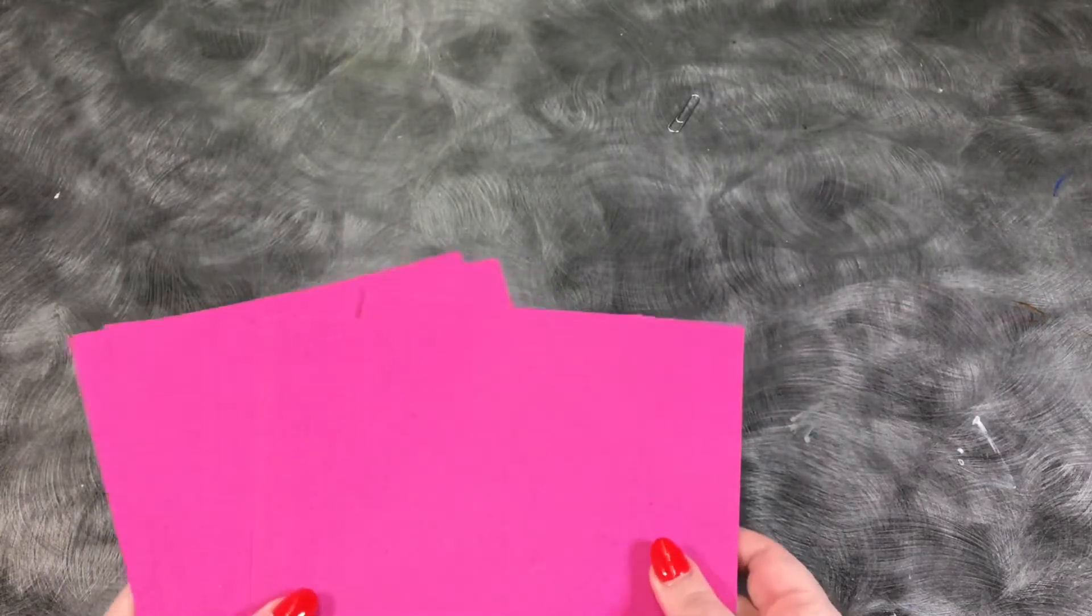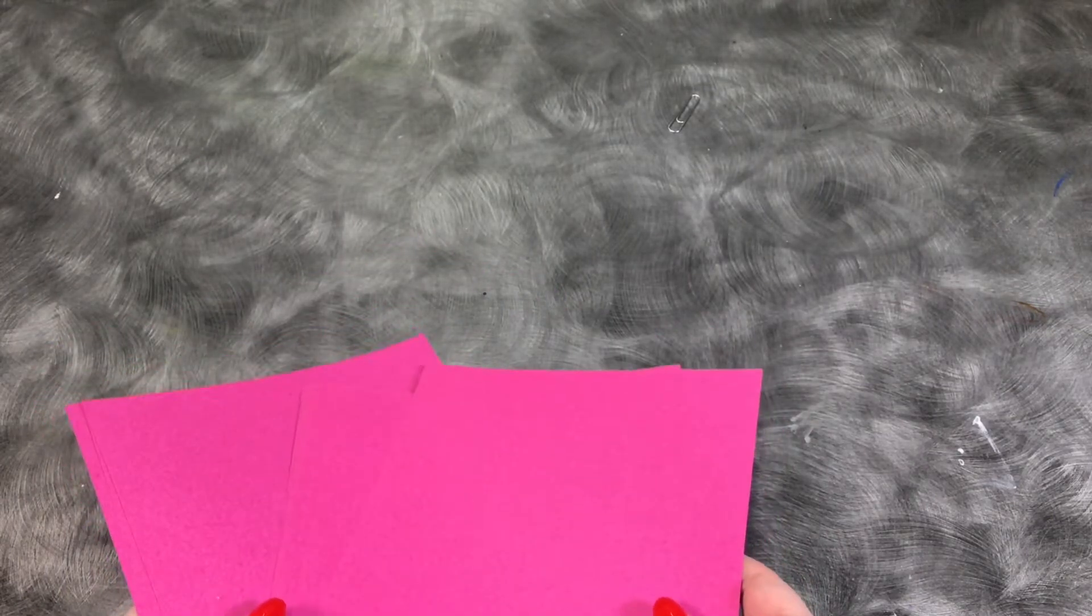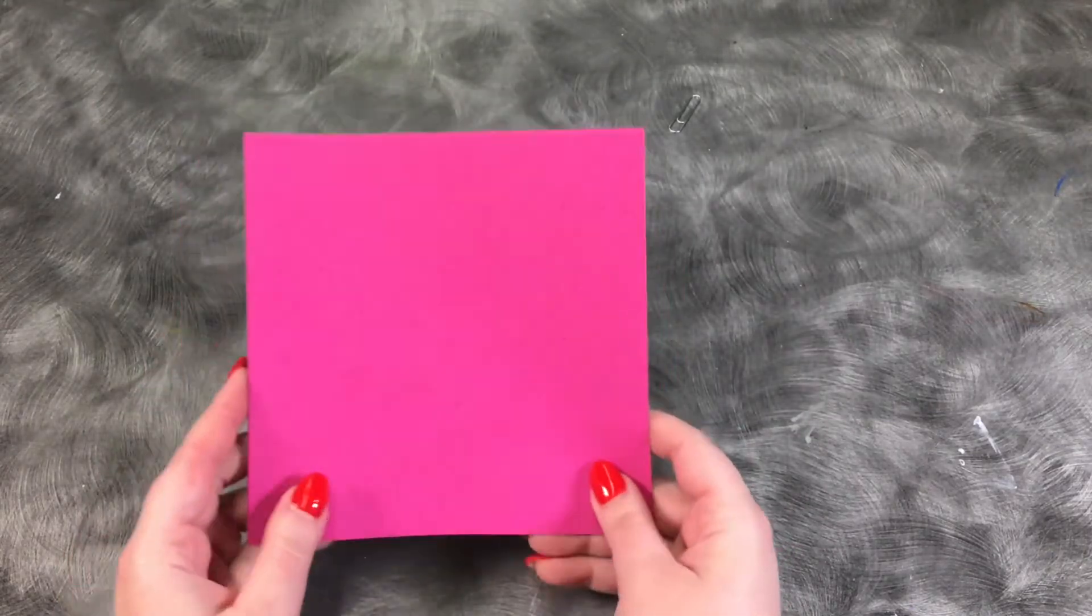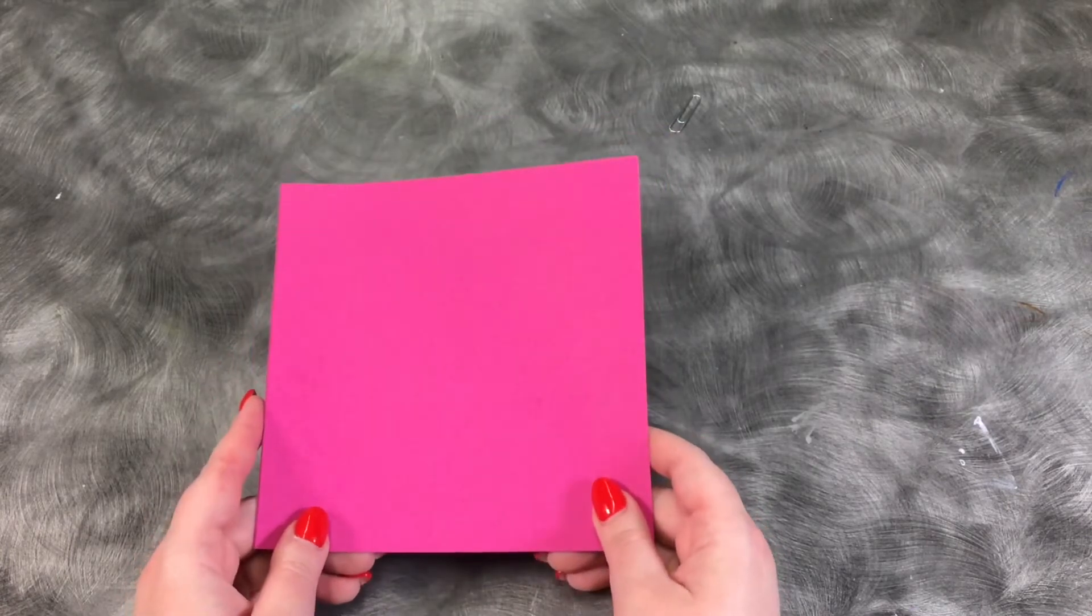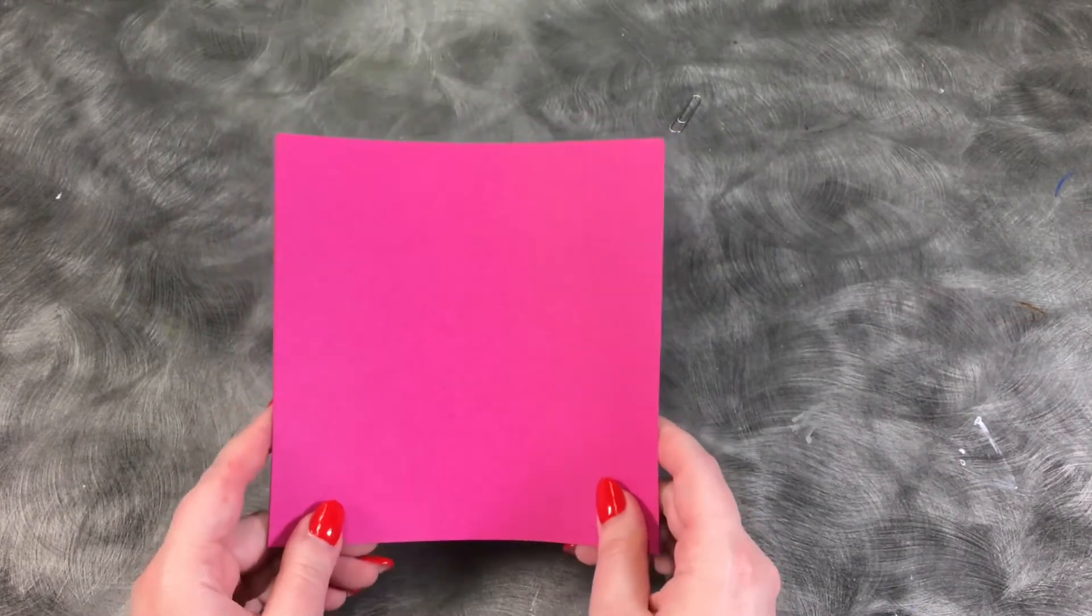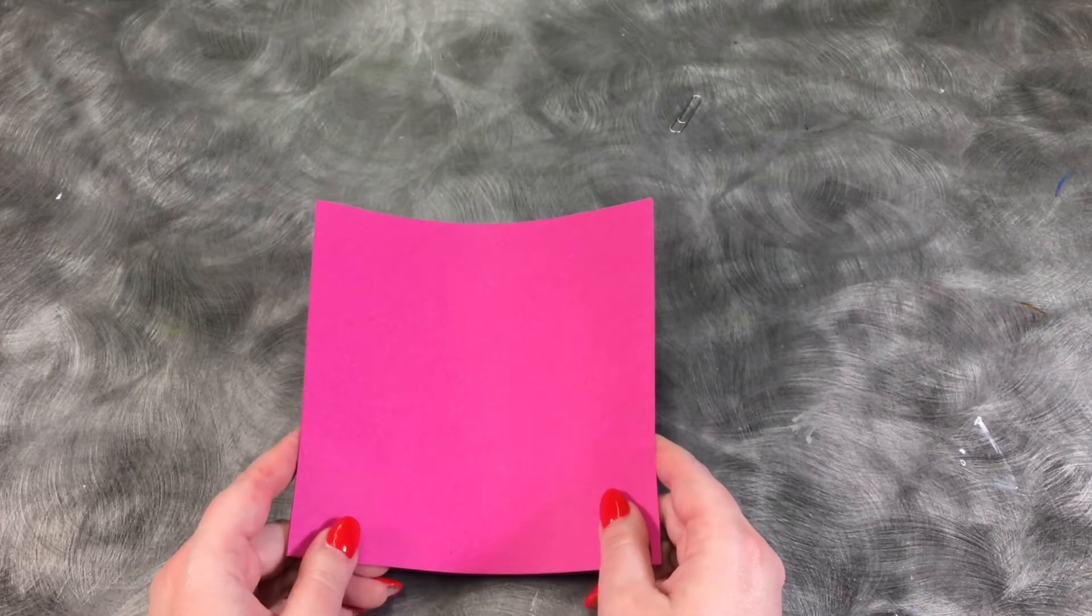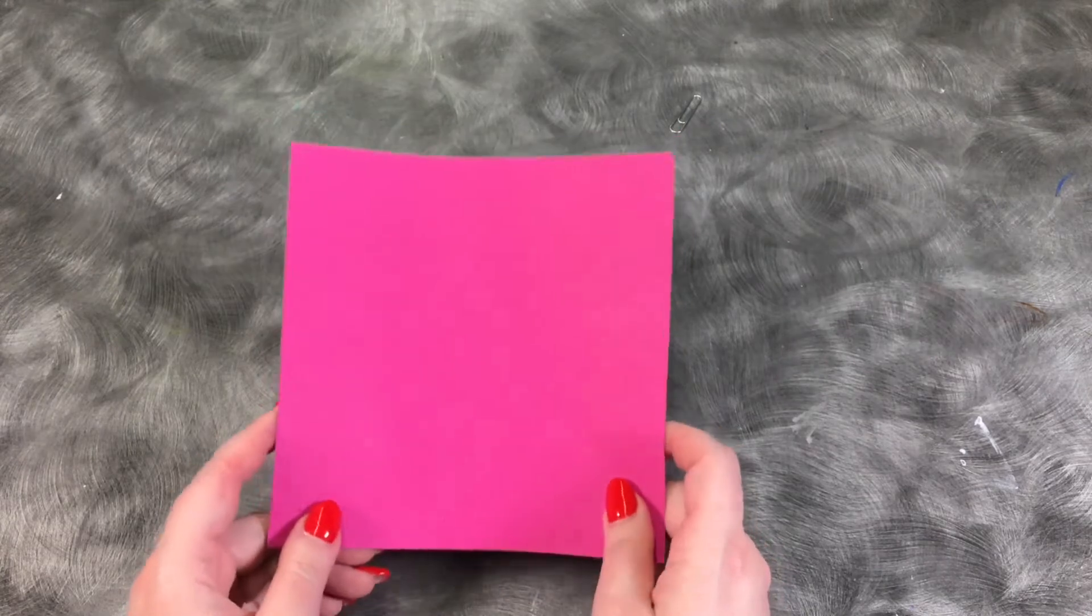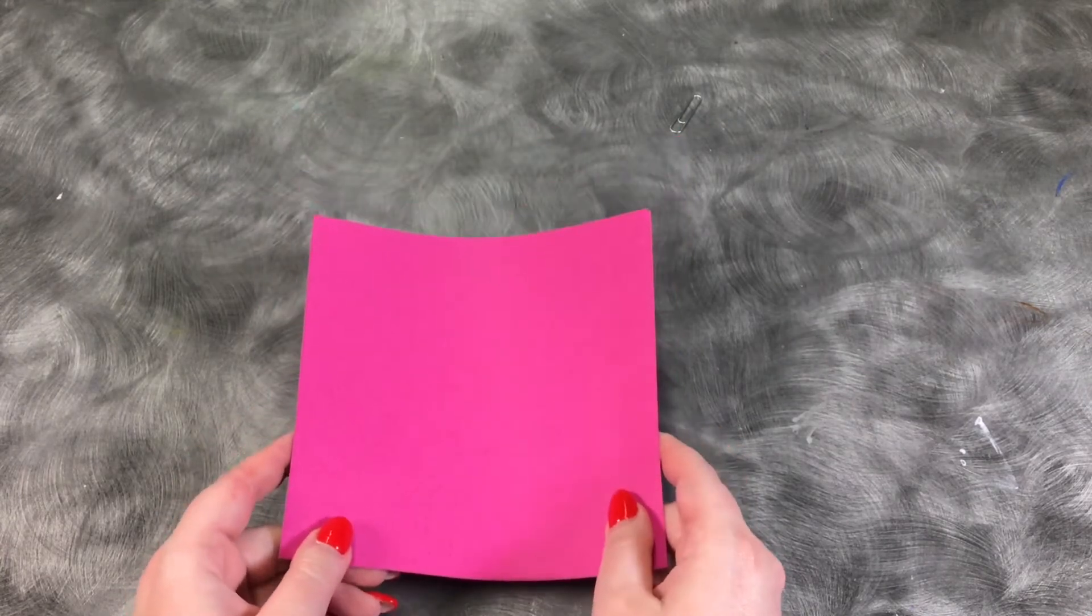What you will need to make this super awesome ninja star is exactly eight squares of origami paper. If you are watching this video at home and you do not have origami paper, any square paper will do. When I first made this craft in middle school I used post-it notes. So if you want to use post-it notes go for it, just be wary of the sticky stuff on the back.